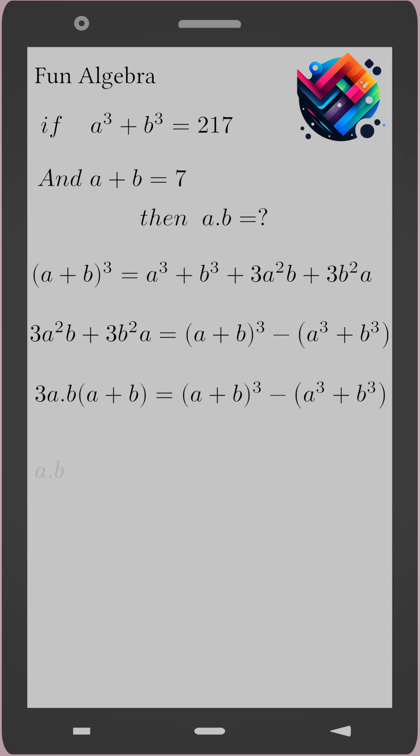From this we get the formula ab = [(a + b)³ - (a³ + b³)] / [3(a + b)].